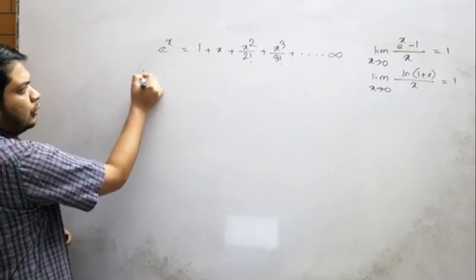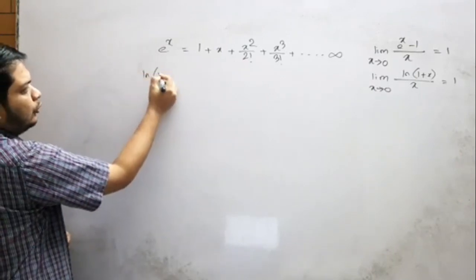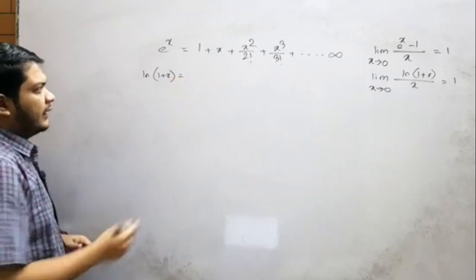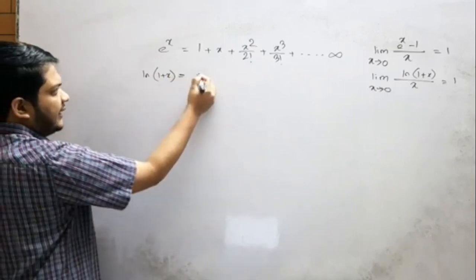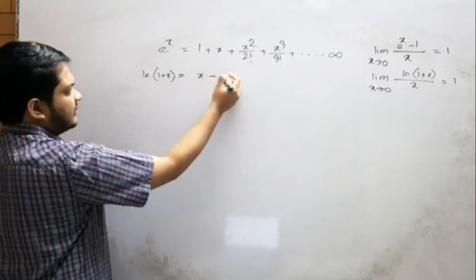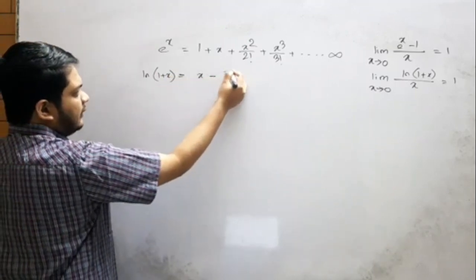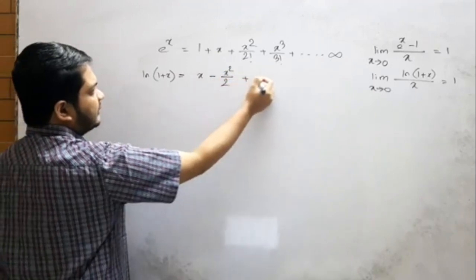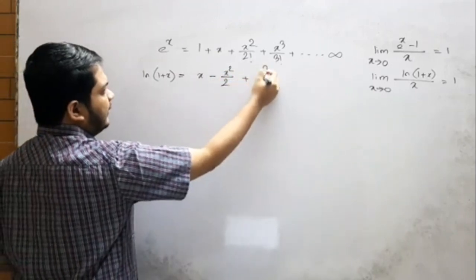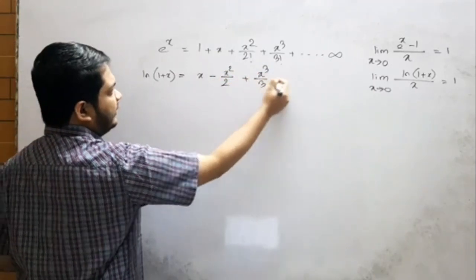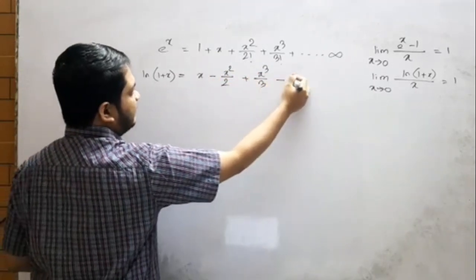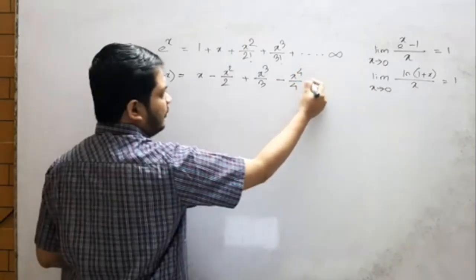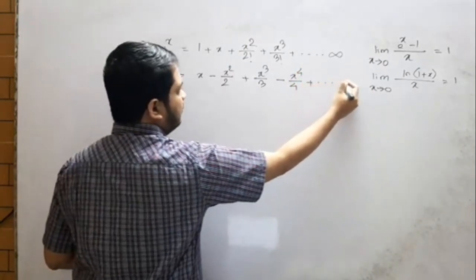So we have 1 plus x plus x squared by 2 factorial, x cubed by 3 factorial, x to the power 4 by 4 factorial, and so on, plus...